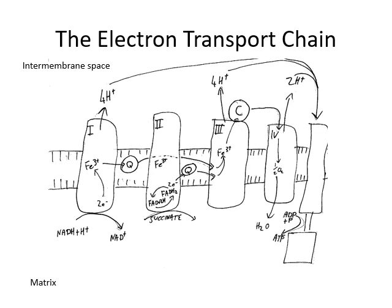One shouldn't assume the electron transport chain always operates at 100% efficiency, and sometimes energy is lost and hydrogens don't get pumped. But under ideal conditions, FADH2 can get six hydrogens pumped into the intermembrane space. These six hydrogens are then sucked through ATP synthase by the electrical gradient, and the energy from these six hydrogens is enough to spin the rotor fast enough to cause two ATP to be formed — the rotor doesn't spin fast enough for all three binding sites. So FADH2 creates 2 ATP in the electron transport chain.